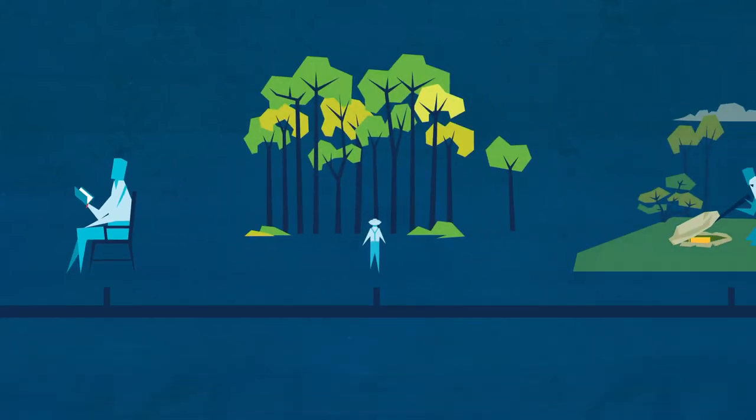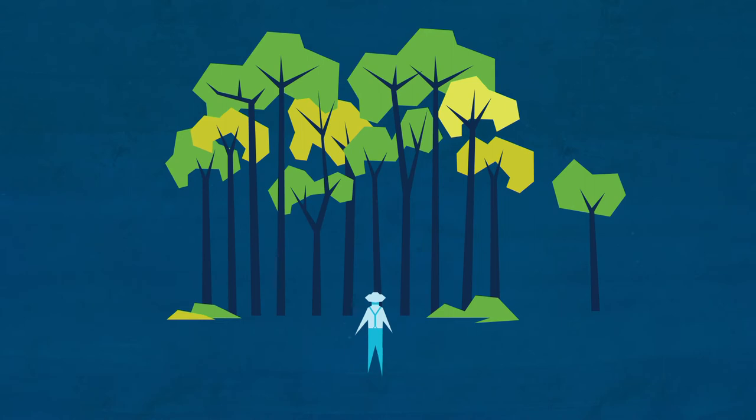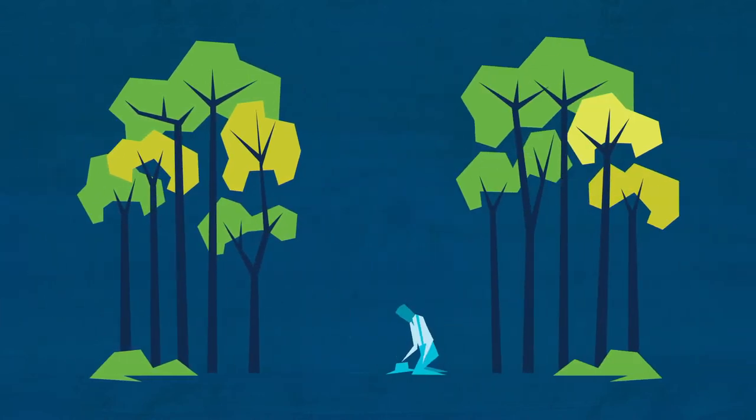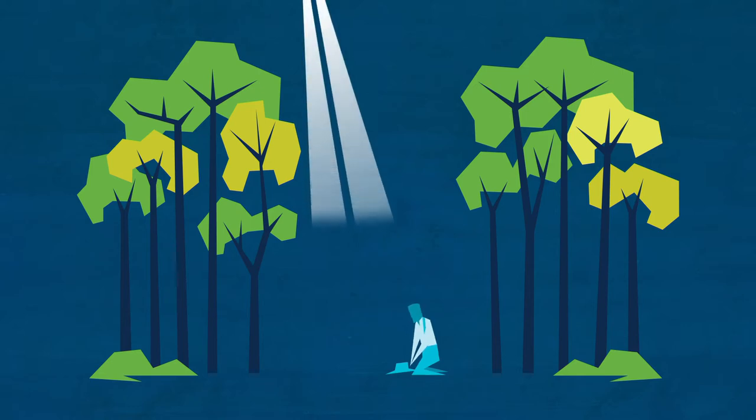On a spring morning in 1820, Joseph went to a grove of trees near his family's farm to pray. Joseph knelt and prayed. Joseph said that as he prayed, I saw a pillar of light, exactly over my head, above the brightness of the sun, which descended gradually until it fell upon me.